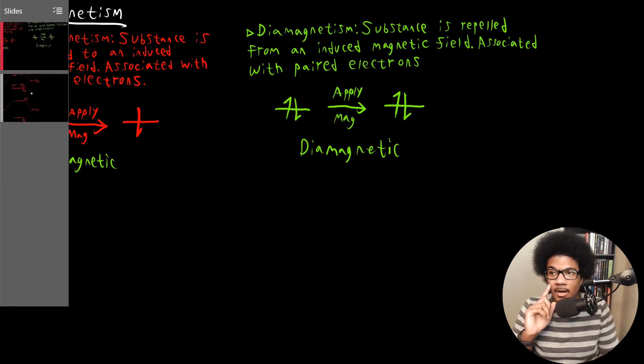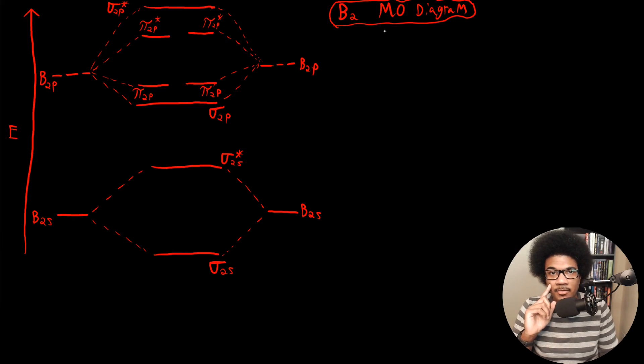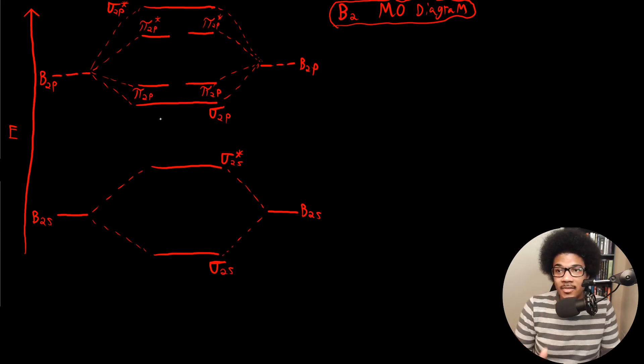So let's look at an example of the boron dimer. So this is B2, and this is its molecular orbital diagram. So we have the molecular orbital diagram for boron dimer B2, and you can see here for the boron 2S, this is our familiar splitting.